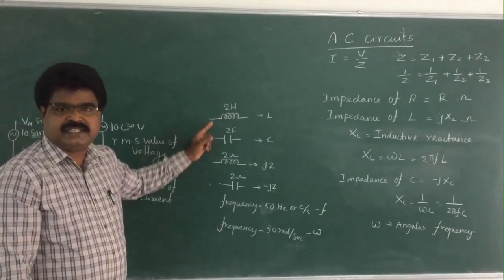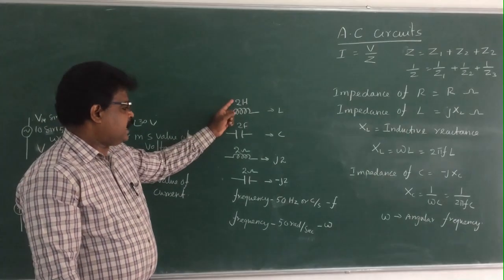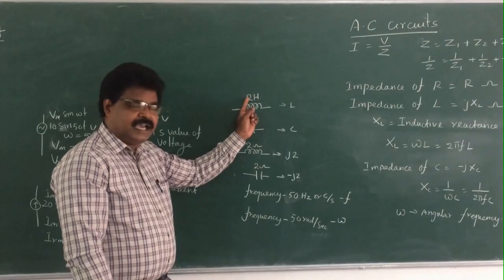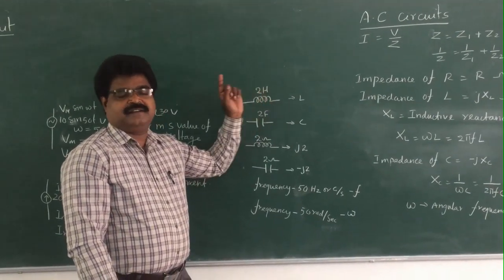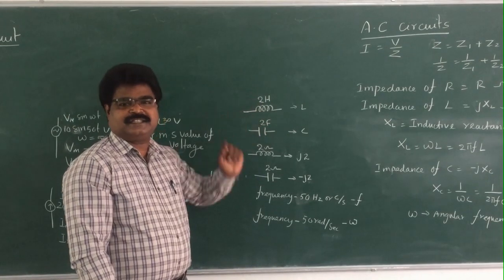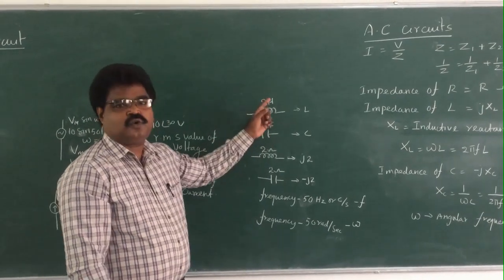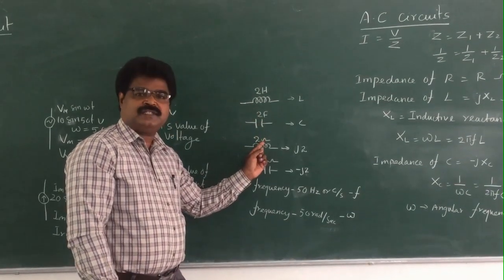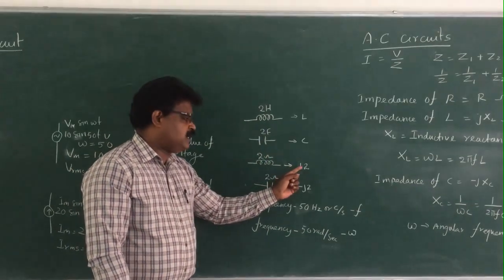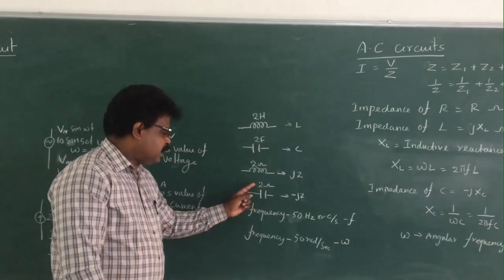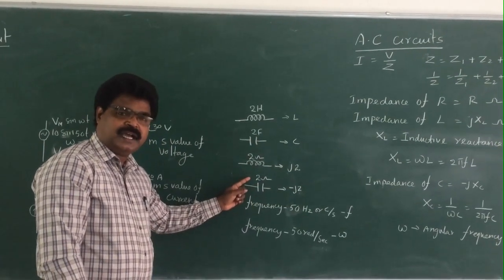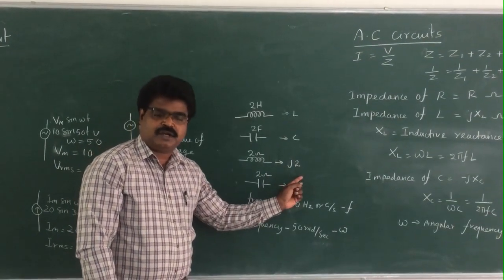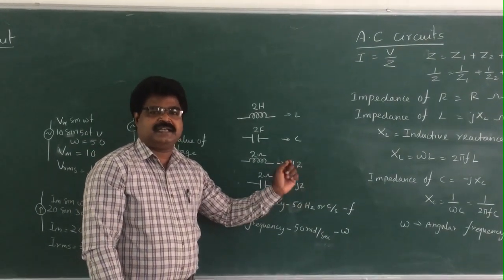Most students make mistakes here because they directly write j·2 for a capacitor, but the correct form for capacitive reactance XC is −j·XC. When the given value is XL (inductive reactance in ohms), you write j·2. When the given value is XC (capacitive reactance in ohms), you write −j·XC.